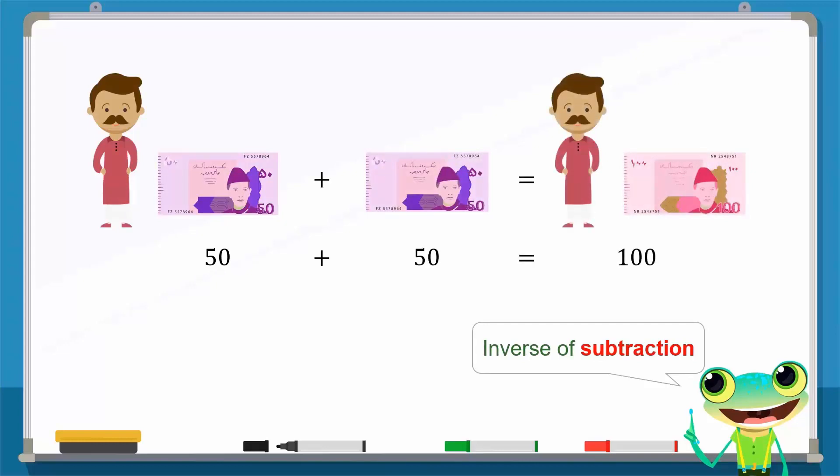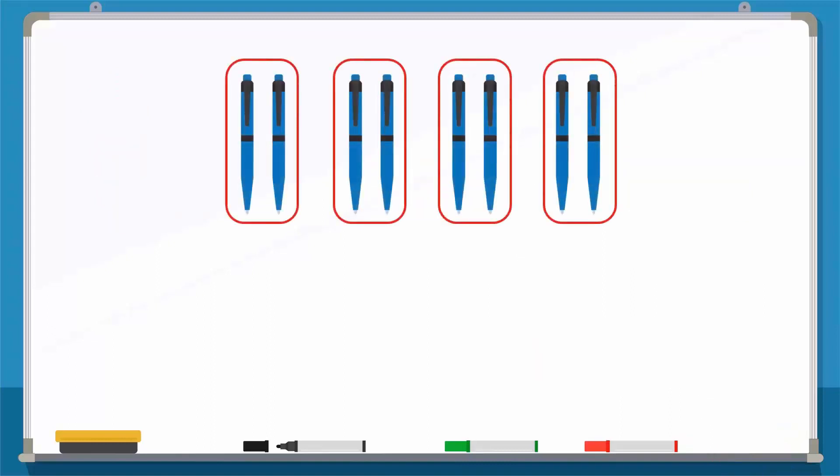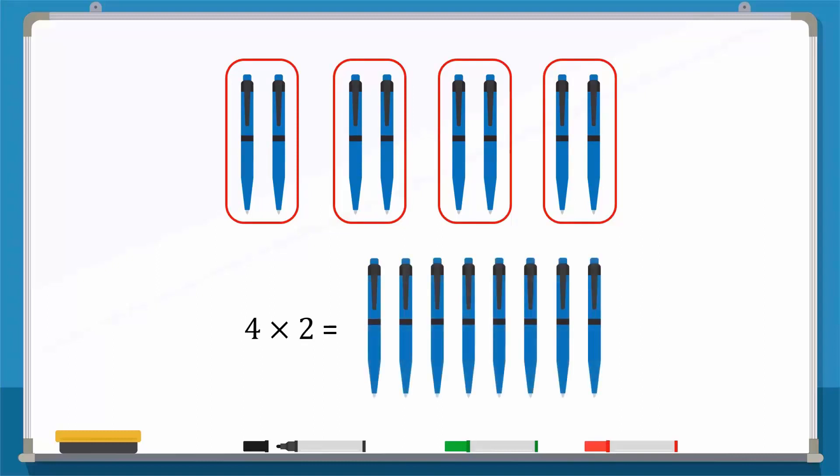Now, let's see what the inverse of multiplication is. For example, if we have 4 groups with 2 pens in each group, we multiply to calculate the total number of pens. This means that 4 multiplied by 2 gives us a total of 8 pens.